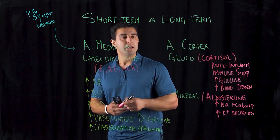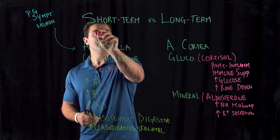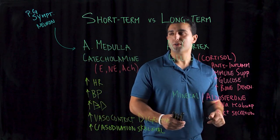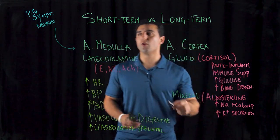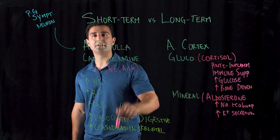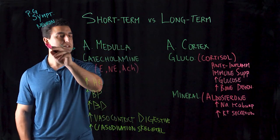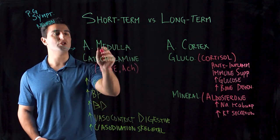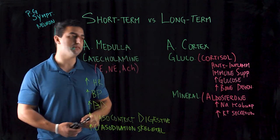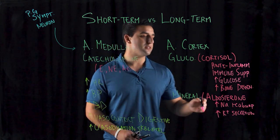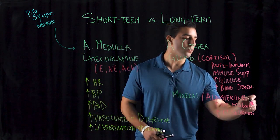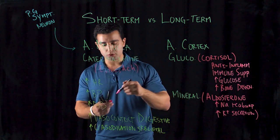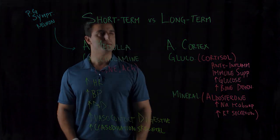So the key difference between acute and chronic stress is which hormones are being secreted. During short-term stress, catecholamines from the adrenal medulla are the main effectors, whereas long-term stress primarily affects the cortex, secreting glucocorticoids and mineralocorticoids.